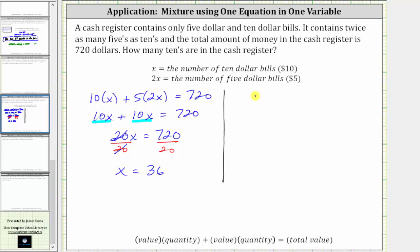Now that we know that x equals 36, we know the cash register has 36 $10 bills, which is what the question is asking. But let's also determine the number of $5 bills. The number of $5 bills is equal to 2x, or x equals 36.